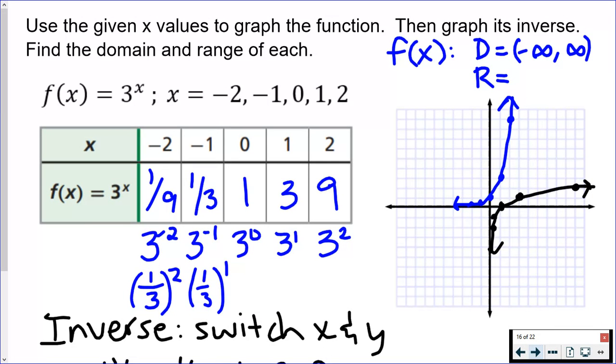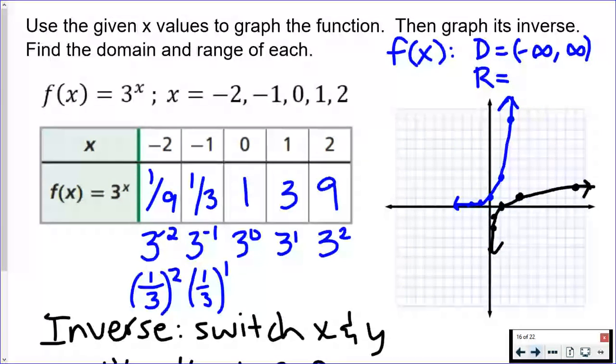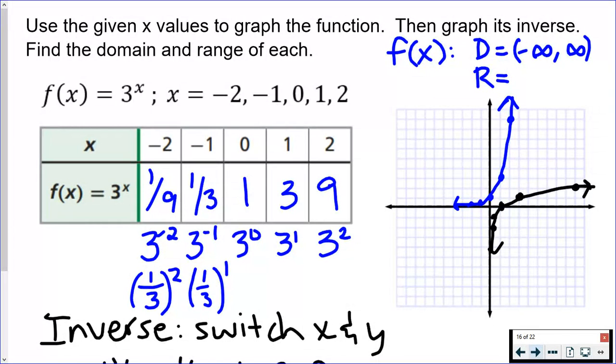If you do 3 to the negative 50 power in your calculator, you get a really really really small number, but it's not zero and it's not negative. So what's happening is you will never have any y values that equal zero or below because that graph will never get past that x-axis. It'll never be down here ever. It stops at that x-axis.